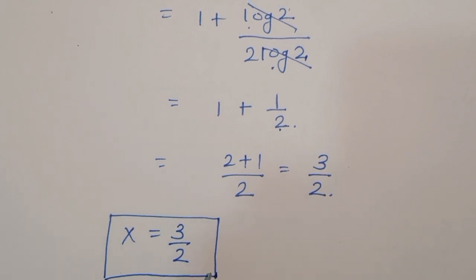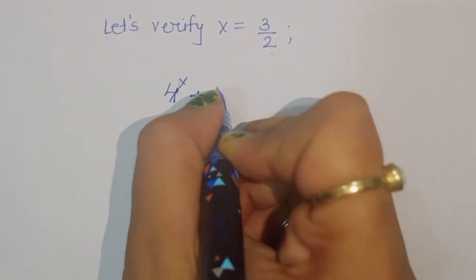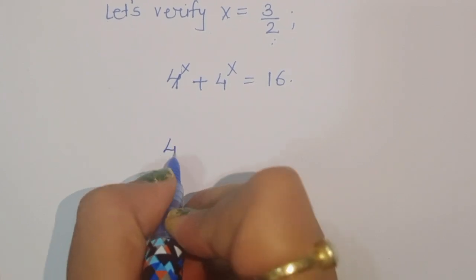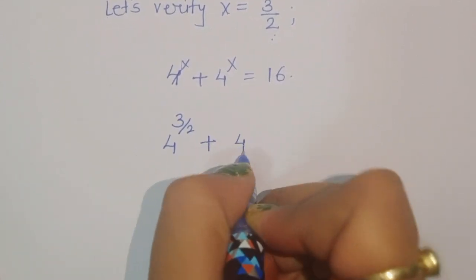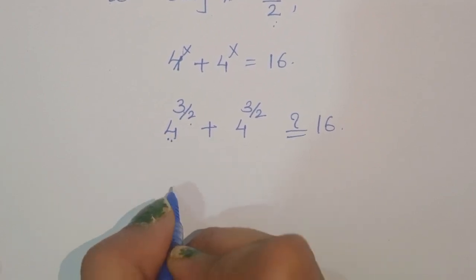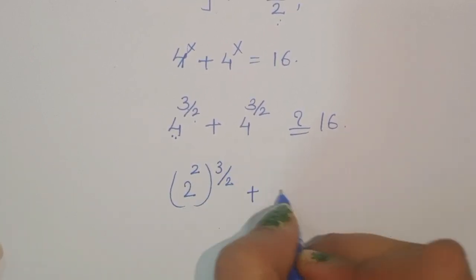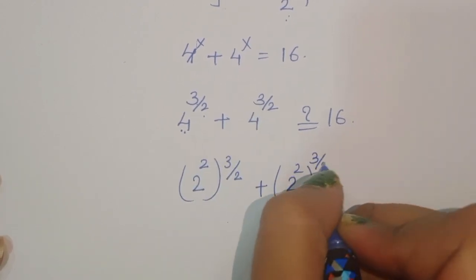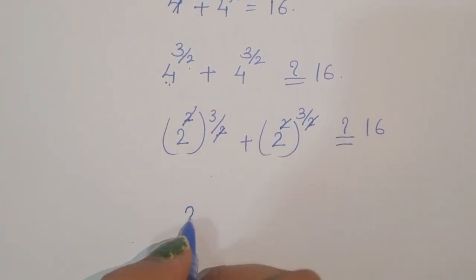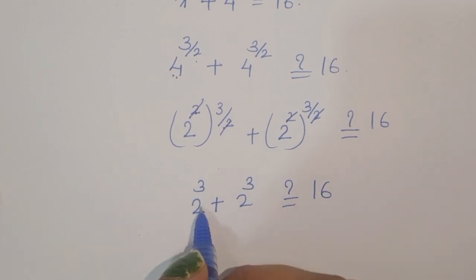Let's verify whether x equals 3 by 2 is correct. The question is 4 power x plus 4 power x equals 16. Substituting x equals 3 by 2: 4 power (3 by 2) plus 4 power (3 by 2). We write 4 as 2 power 2, so we get 2 power 2 power (3 by 2) plus 2 power 2 power (3 by 2). Multiplying the exponents, the 2s cancel and we get 2 power 3 plus 2 power 3.